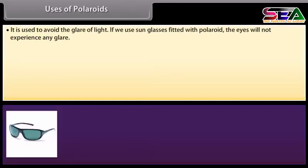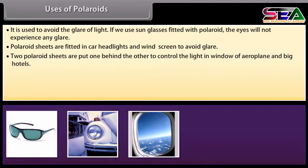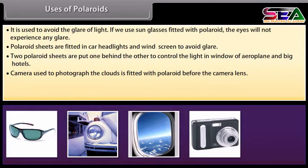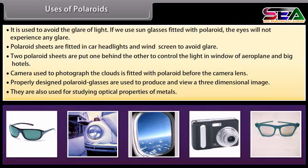Uses of polaroids. Some important uses of polaroids are following: It is used to avoid the glare of light. If we use sunglasses fitted with polaroid, the eyes will not experience any glare. Polaroid sheets are fitted in car headlights and windscreen to avoid glare. Two polaroid sheets are put one behind the other to control the light in window of aeroplane and big hotels. Cameras used to photograph the clouds are fitted with polaroid. Properly designed polaroid glasses are used to produce and view a three dimensional image. They are also used for studying optical properties of metals.